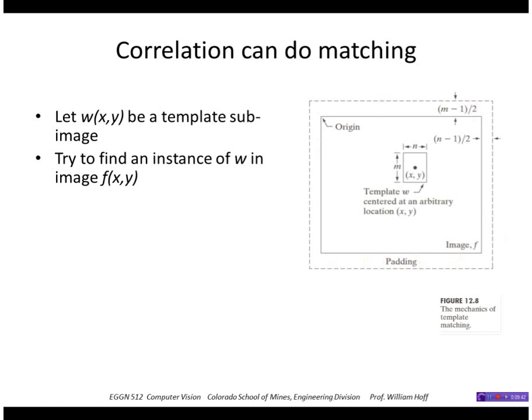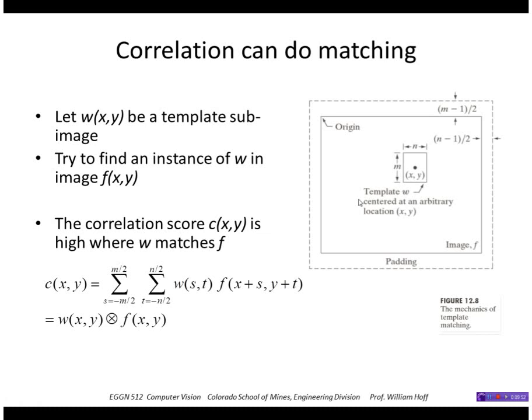And we're going to compute the largest value of that cross-correlation, and that will be the location of w in f. So we get a high score where w matches f.